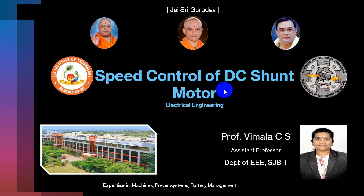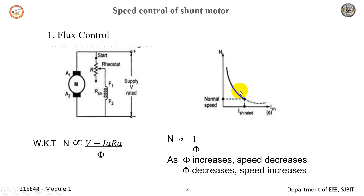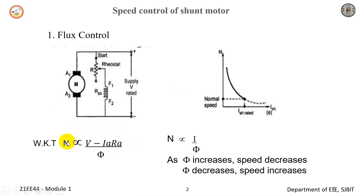Welcome to the session on speed control of DC shunt motor. As we know, the factors controlling motor speed: n is proportional to (V minus Ia·Ra) divided by phi. Where the difference in potential V minus Ia·Ra, if it is more the speed increases, and if the potential difference between these two terms is less, then speed decreases.